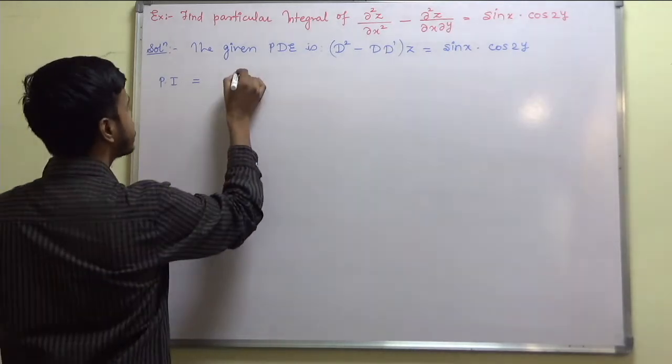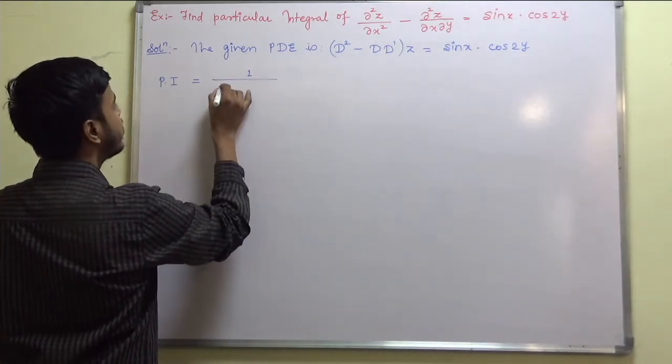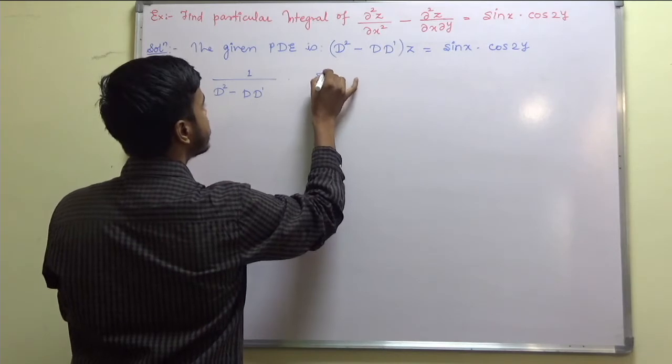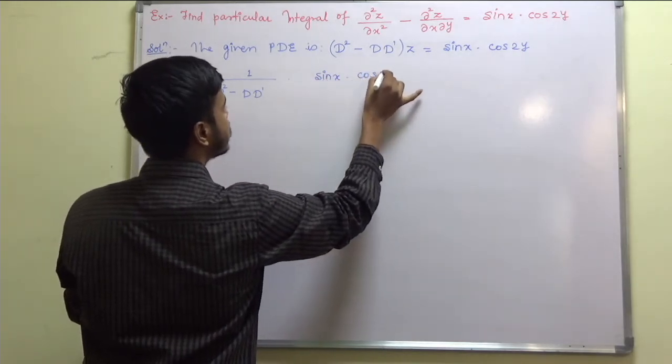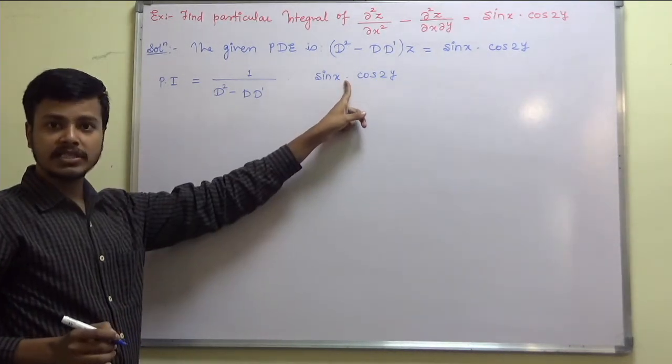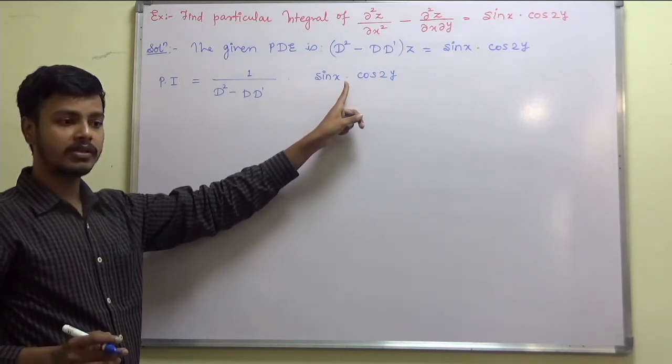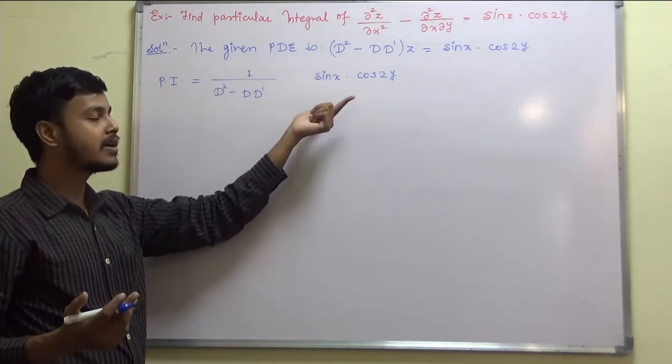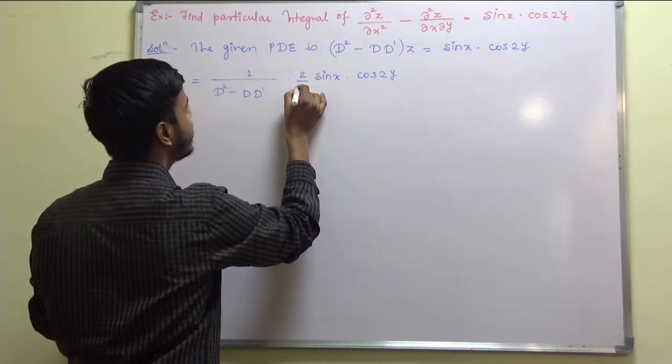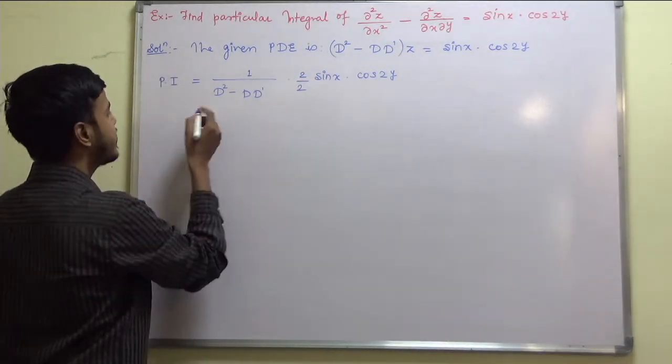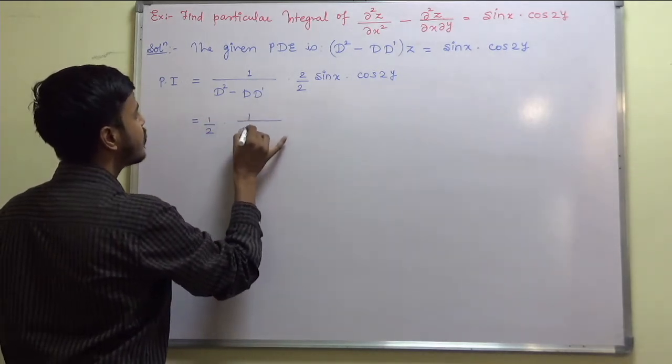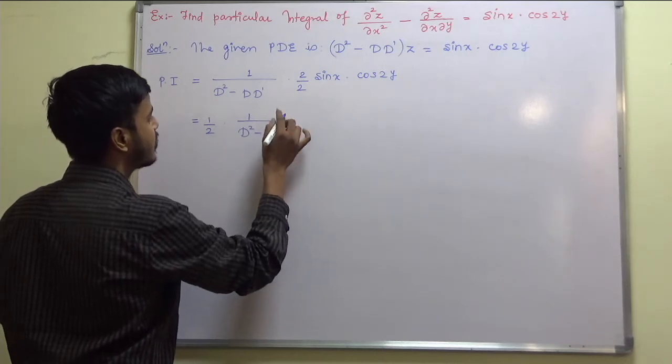What you are going to do is just write down PI equals 1 upon D square minus D D dash into sine x into cos 2y. Now this is again, I am telling you this is into, this is not plus. So don't bother, don't think like this is just plus and it is printing mistake, nothing like that. If such is the case, then what you need to do is multiply by 2 and divide by 2. And I will be taking this 1 by 2 outside. Then it would be D squared minus D D dash into.